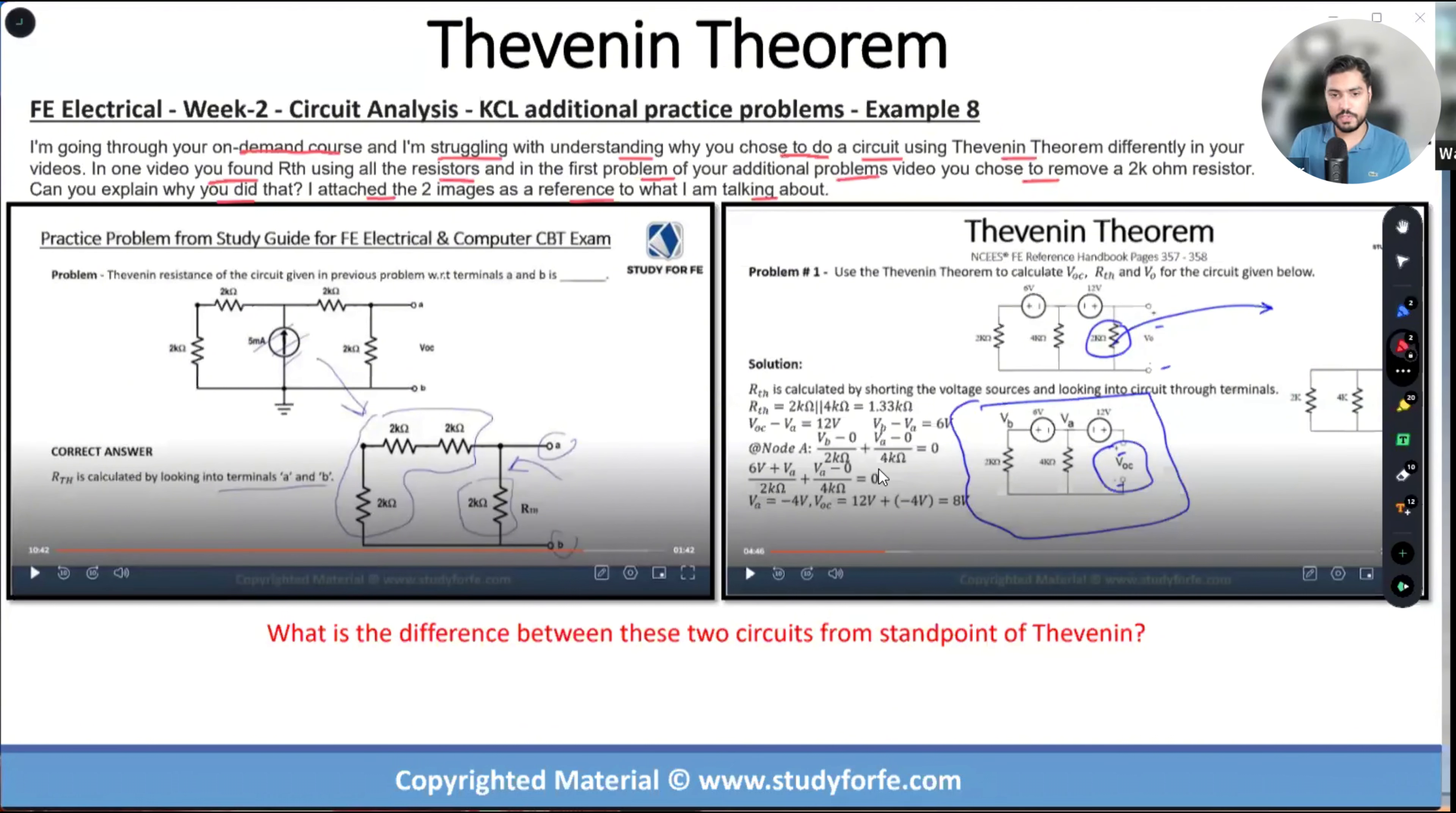So really thoughtful of the student to actually make my life a little bit easier by including the two screenshots. The easier you make it for me to follow your train of thought, the easier I will be able to respond back. So this is a problem from the study guide and this is a problem from additional practice problems within the lecture. Both of these I solved in the course. In this problem, when I'm calculating R Thevenin I decided to leave the 2k in. In this problem, very similar problem, I took the 2k out.